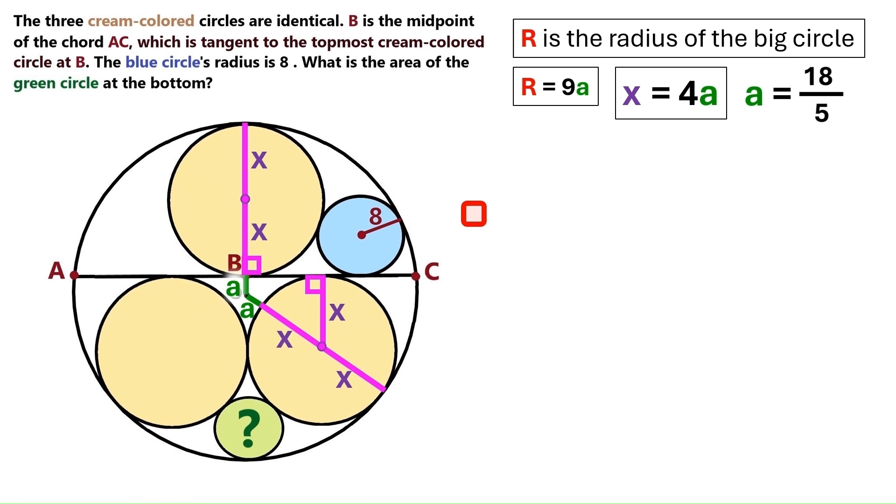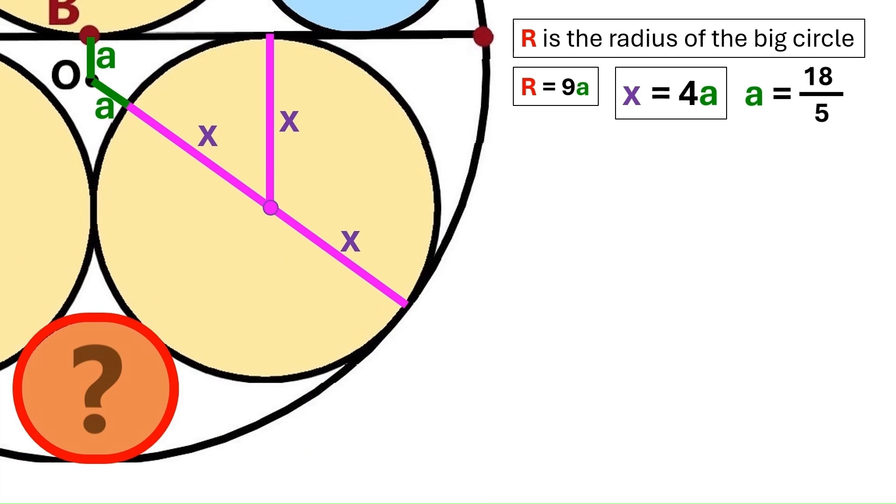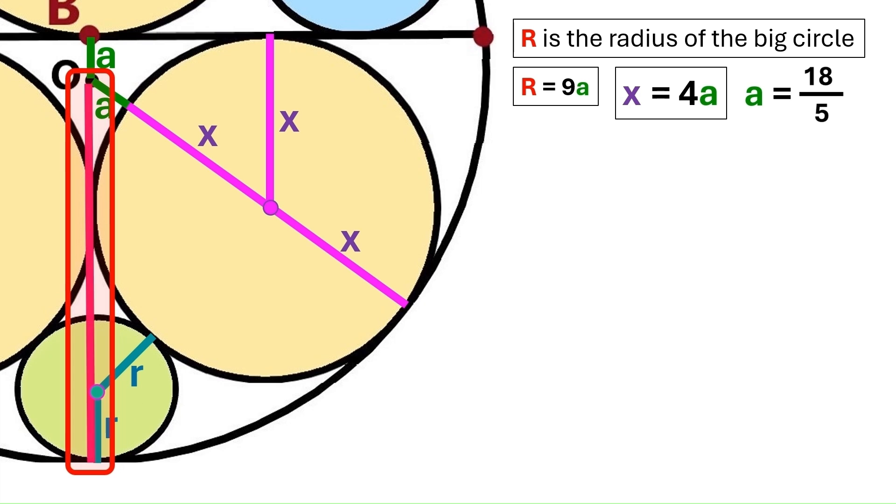Let's bring back the original image. And this time we zoom into this lower part of the diagram. Now we want to find this green circle's area. Let's draw a radius here and we'll call it lowercase r. And let's draw another radius r here. Now let's draw a radius for the big circle here and label it like this. And we know the radius of the big circle is 9a. So let's change this capital R to 9a.